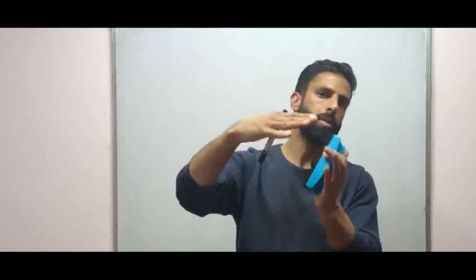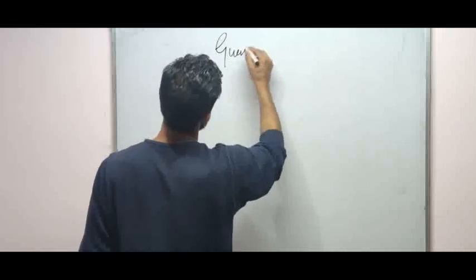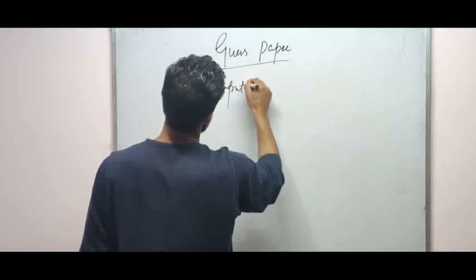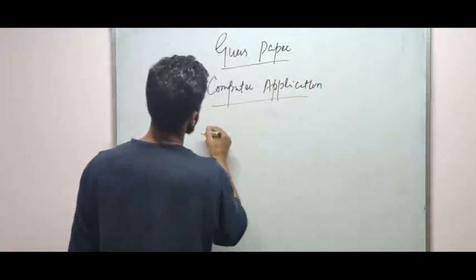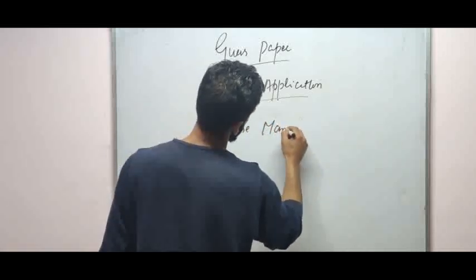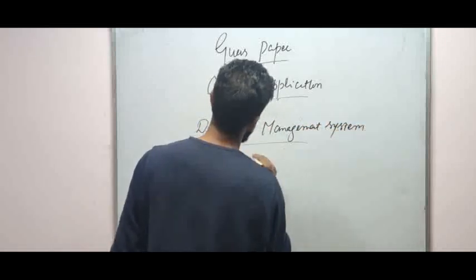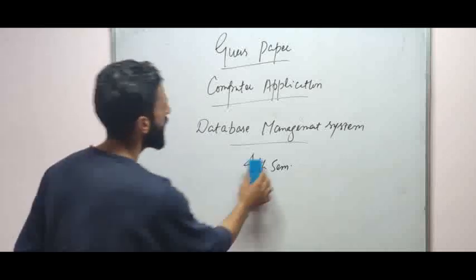So overall the paper is of 60 marks. We will now discuss the guest paper. First we will discuss the long answer type questions, then the short answer type questions. The guest paper is for Computer Applications — Database Management System — for BG fourth semester.